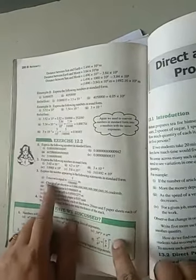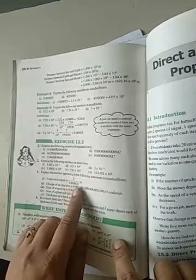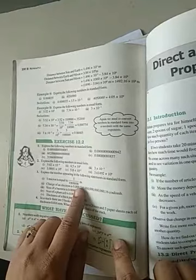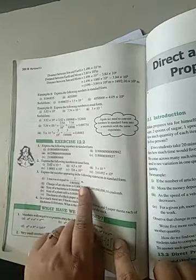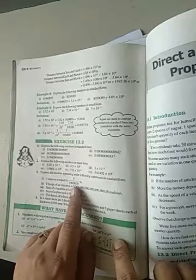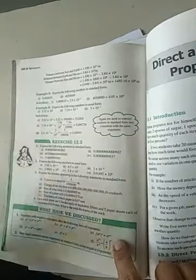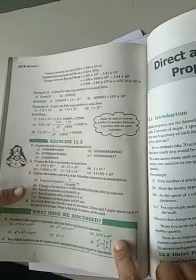Express the number appearing in the following statement in standard form. See the question, we have to represent the numbers into standard form. The first one, 1 micron is equal to 1 upon, how many zeros are given? 6, okay? And unit is meter. Now, this number is in denominator, so when it will go to the numerator, you know that power will be negative.